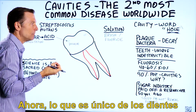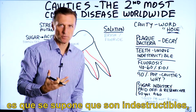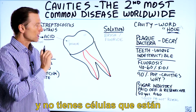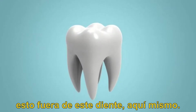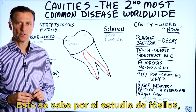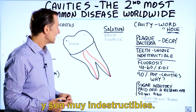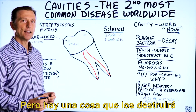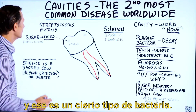What's unique about the teeth is that they're supposed to be indestructible — you don't have cells that are constantly being replaced on the enamel, this outside of the tooth. They know this from looking at fossils. Certain skulls, the teeth are usually still there and they're very indestructible, but there's one thing that will destroy them: a certain type of bacteria.